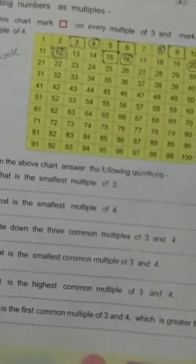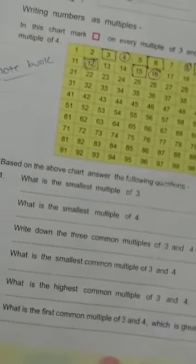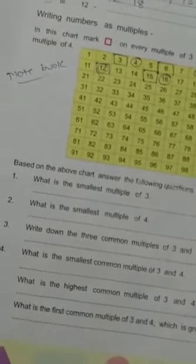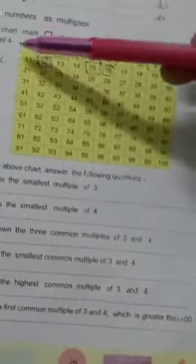See children, here a 1 to 100 chart is given. To help you understand easily, we will make a square on multiples of 3 and we will make a circle on multiples of 4. Now see,